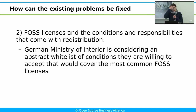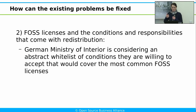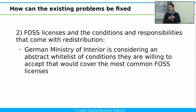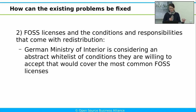Regarding the worry that licenses come with conditions they have to comply with: the German Ministry of Interior is considering an abstract whitelist for use with these model contracts — a whitelist of conditions they are willing to accept, which would cover the most common FOSS licenses. These conditions are exactly the ones I read out earlier in the GPL2, such as handing over the source code and the corresponding license, the copyright notice, an overview of the changes made to the software, and redistributing the software under the same license — the copyleft effect. For other more uncommon licenses, the Ministry would decide on a case-by-case basis whether they would accept those license conditions. This whitelist would help ensure that the most common FOSS licenses can easily be procured.